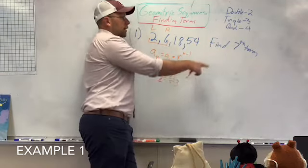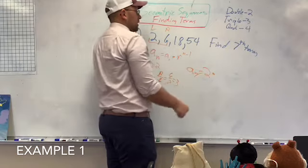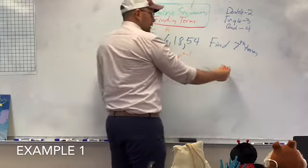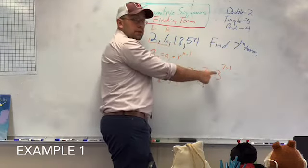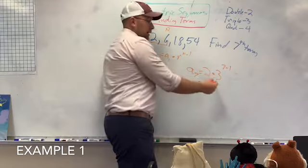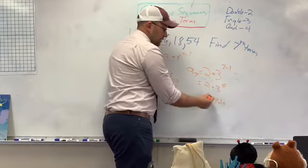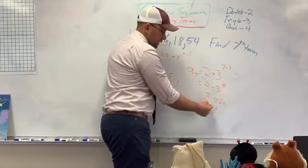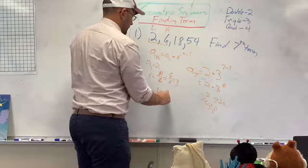So I plug all this in. A, I want to find the 7th term, equals my A1, which is 2, times my common ratio, which is 3, to the 7, because that's what I'm looking for right there, minus 1. Make sure you do your order of operations first. Do not multiply the 2 times the 3 first and get 6, and then take it to 6th power. In your order of operations, you do parentheses, exponents. So that's 3 to the 6th power times 2. 3 to the 6th power is 729, times 2, gives me 1458, is my answer.